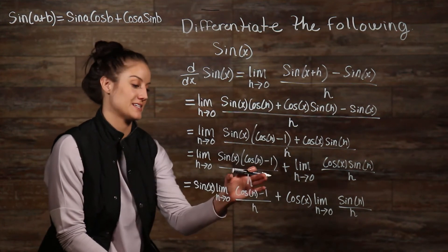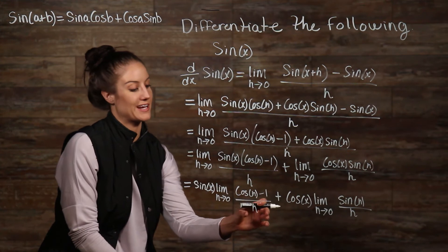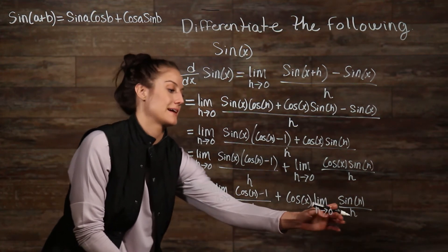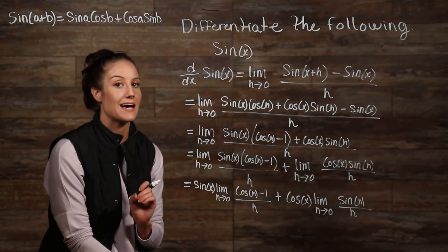Now, we have our facts here that we can now evaluate. We know that cosine of h minus 1 over h is 0, and we know that sine of h over h is 1. So now what we have left is...